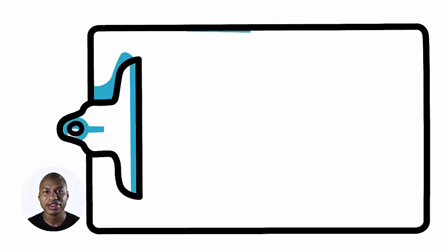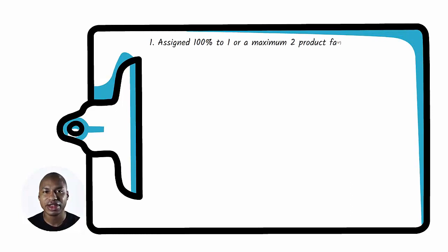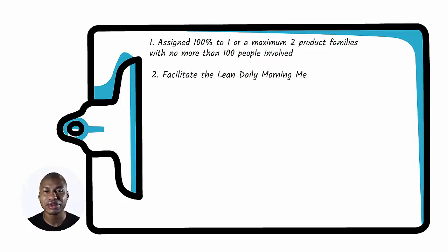Let me now describe in detail what I think a Continuous Improvement Engineer has to do. First, with the Continuous Improvement Manager, he has to be assigned 100% to one or a maximum of two product families with no more than 100 people involved. Second, facilitate the Lean Daily Morning Meeting, helping the value stream leader and the team to be daily present and create visual management of the KPI.